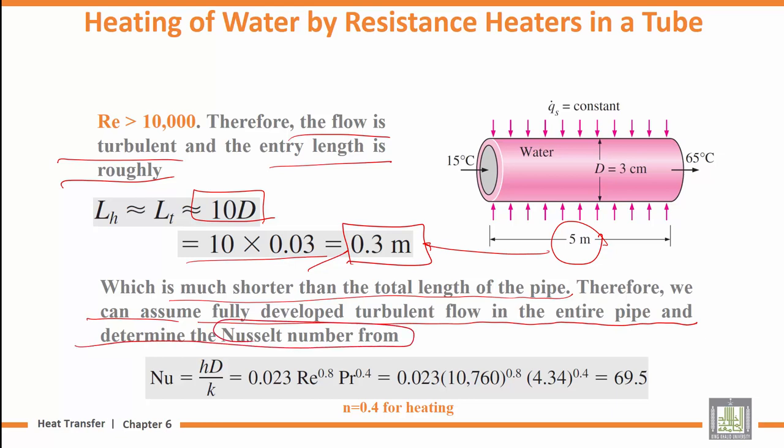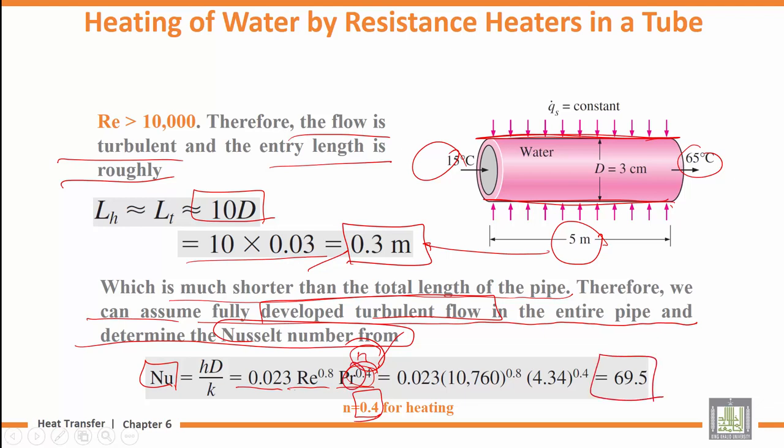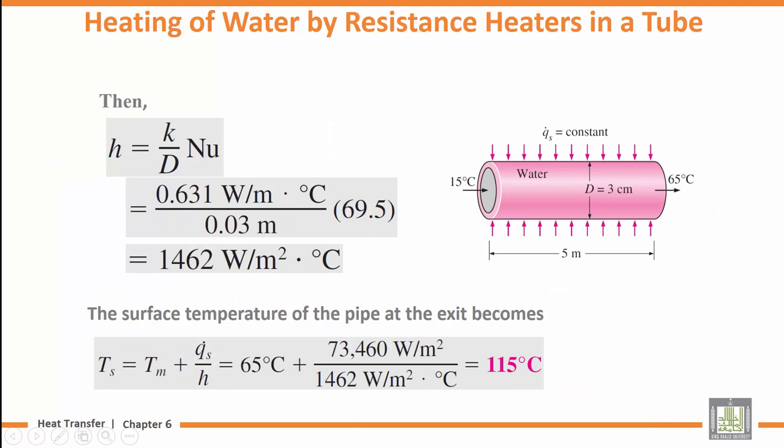For fully developed flow, we determine the Nusselt number using Nu equals 0.023 times Re to the 0.8 times Pr to the power. Since we are heating, the exponent is 0.4. The Nusselt number is 69.5. Now we can calculate h. H equals Nu times k over D, the diameter of the tube. So h is 1462.